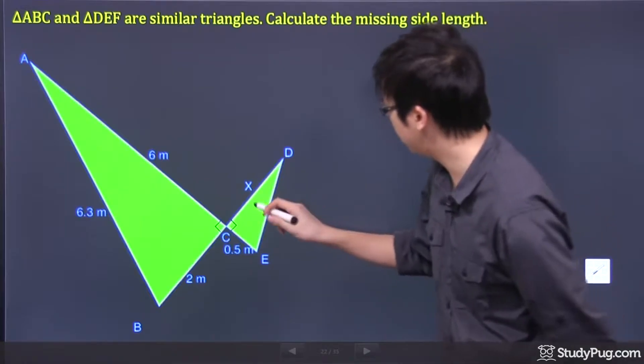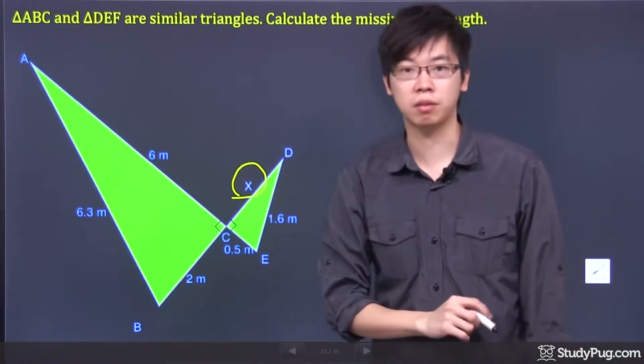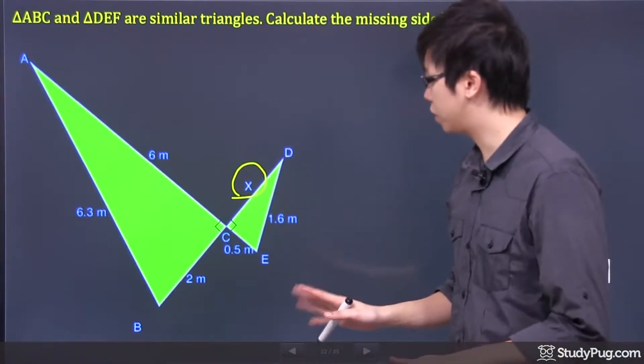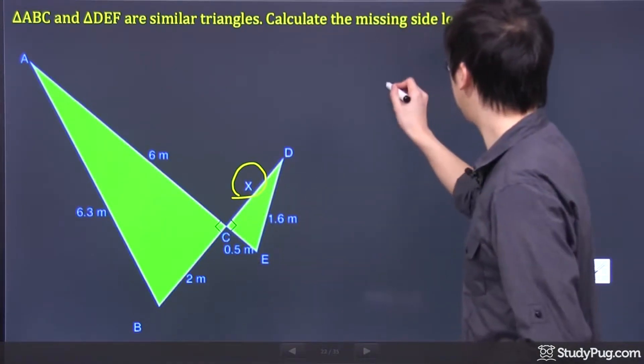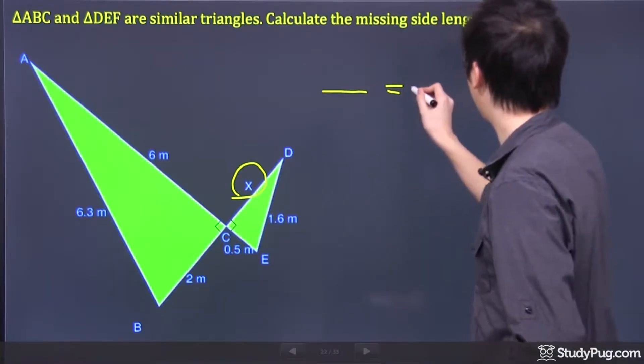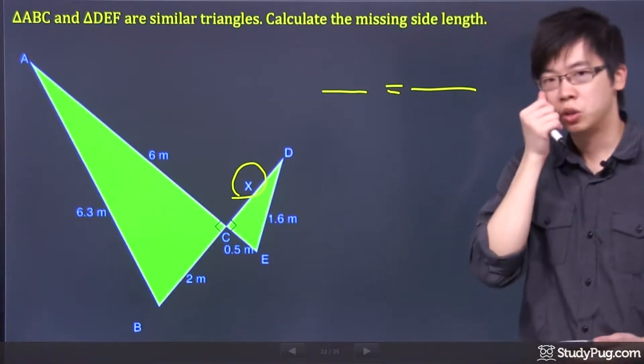We need to calculate the missing length. Turns out the missing length is right here. What you do first is you have to set up a proportional fraction. Let's make an equal sign right here and put up fraction signs. So what you do is this.